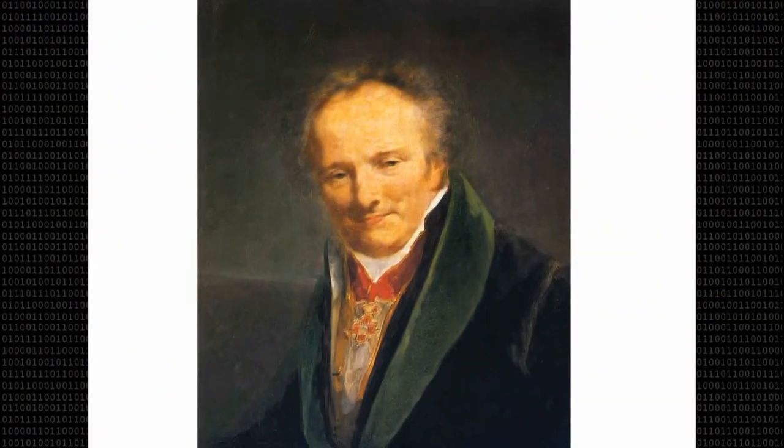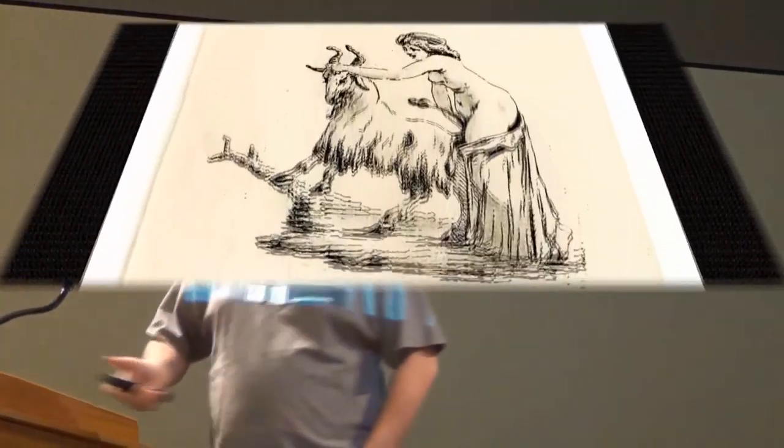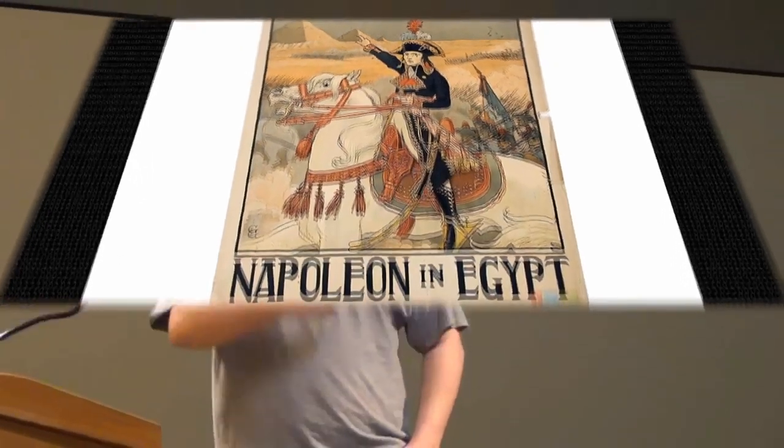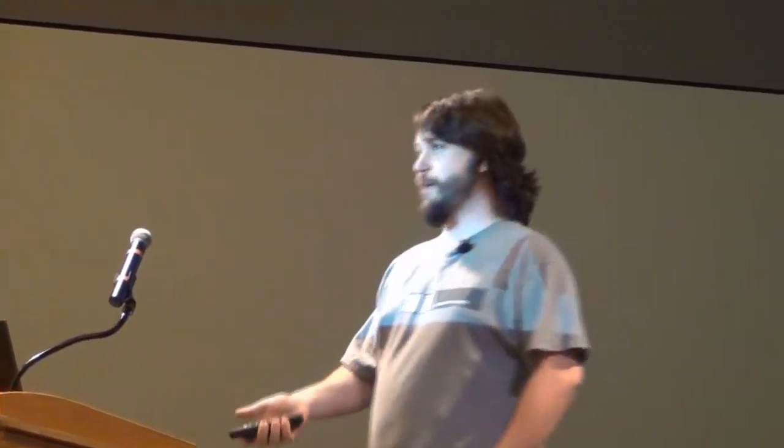Vivant Denon was an amateur archaeologist. He was an excellent artist, learned guy, wrote a lot, attended salons in Paris. He was also a very popular pornographer with a lot of weird porn. But more importantly to our story, he traveled with Napoleon in Egypt.